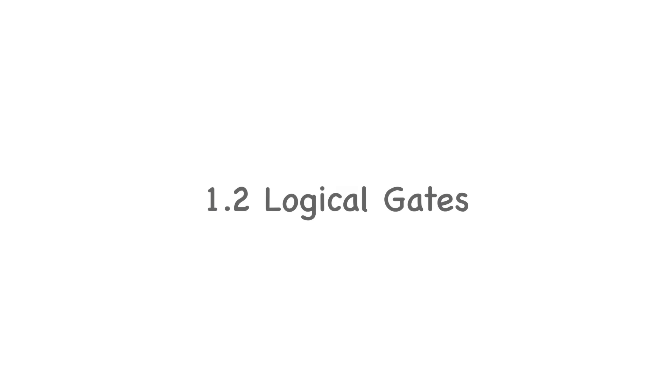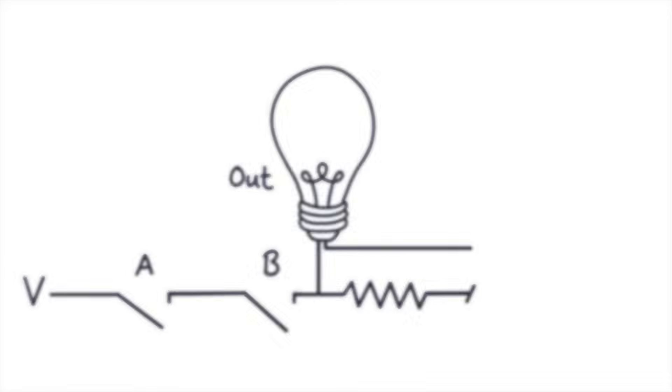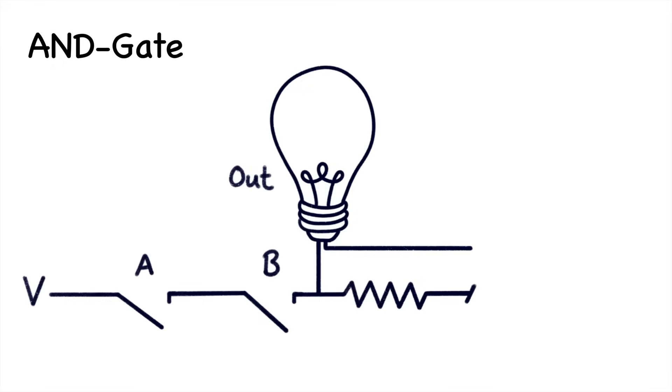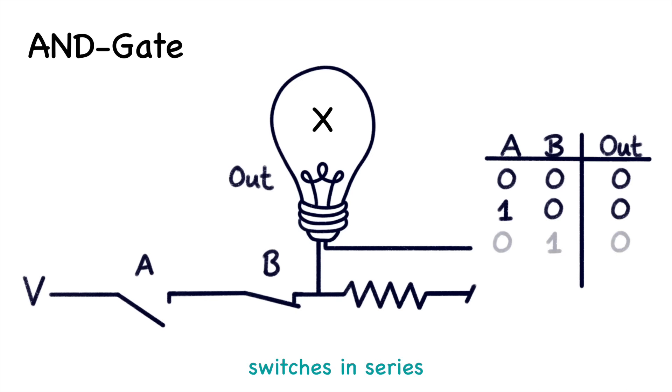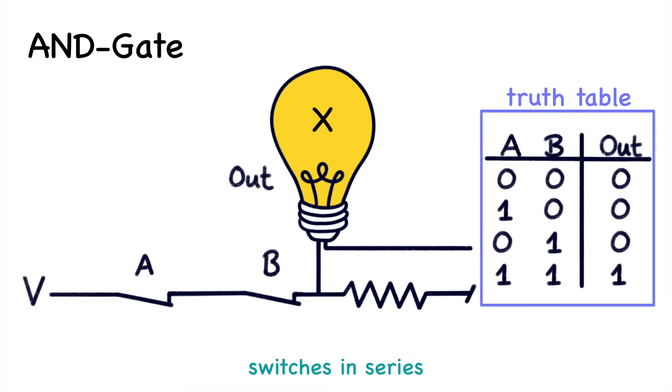To perform logical operations such as additions on stored bits we need what are called gates. One important example are AND gates which are for the most part just two switches corresponding to the input bits A and B in series. Current can only reach the light bulb which represents our output bit X if both switches are closed. Hence X is only set to 1 if both A and B have value 1. We can summarize the input-output relation of this gate in a so-called truth table.